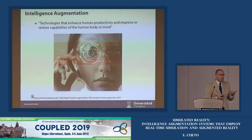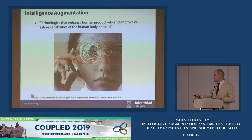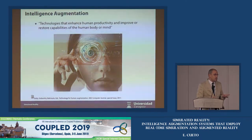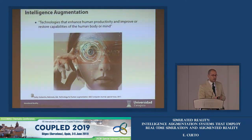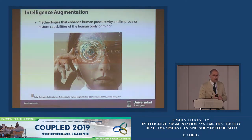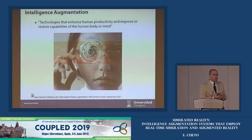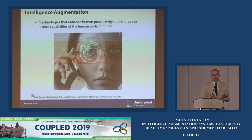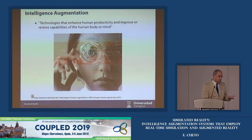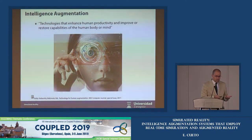He referred to augmenting human intellect as a way of increasing the capability of a man to approach a complex problem situation, to gain comprehension suited to his particular needs, and to derive solutions to the problems. More recent definitions, for instance from the Computer Journal two years ago, define intelligence augmentation as the set of technologies that enhance human productivity and improve or restore capabilities of the human body or mind — considering only computer-based solutions.